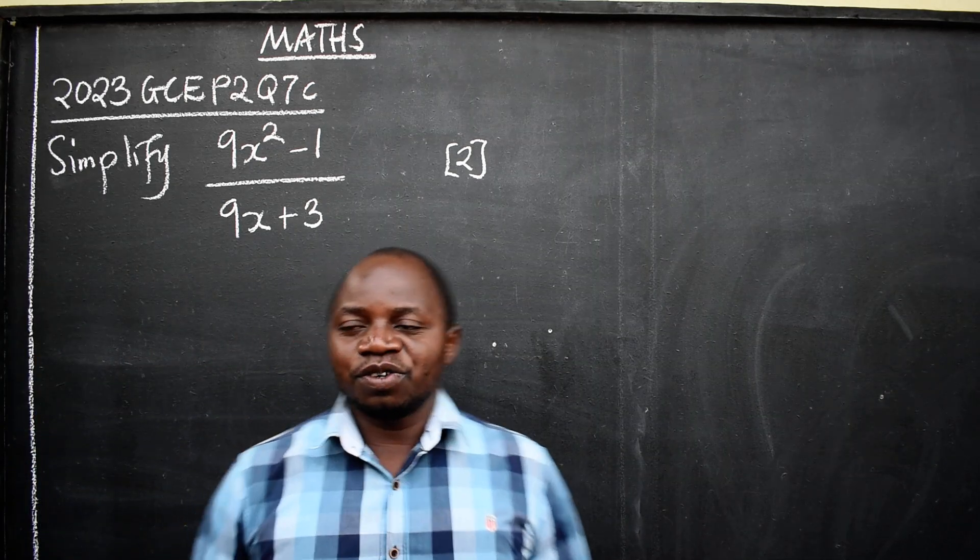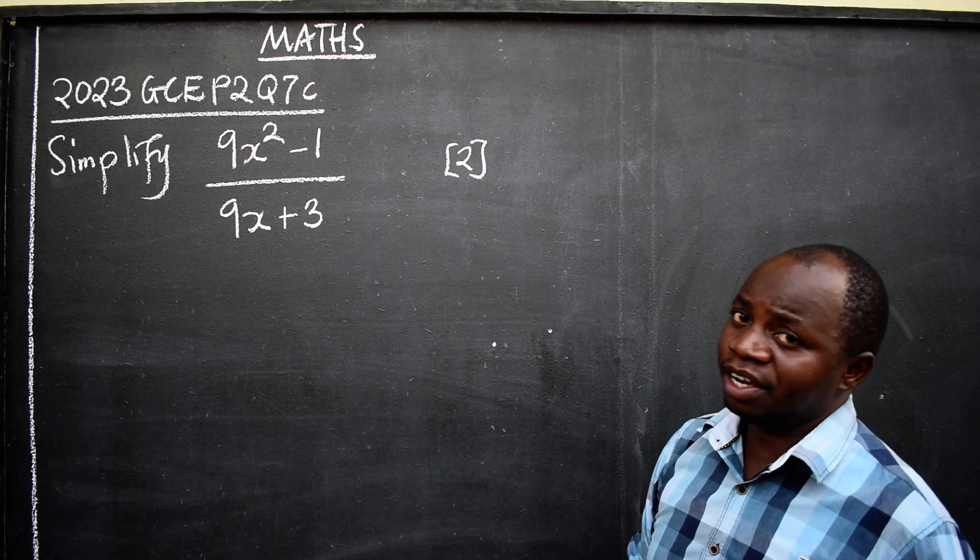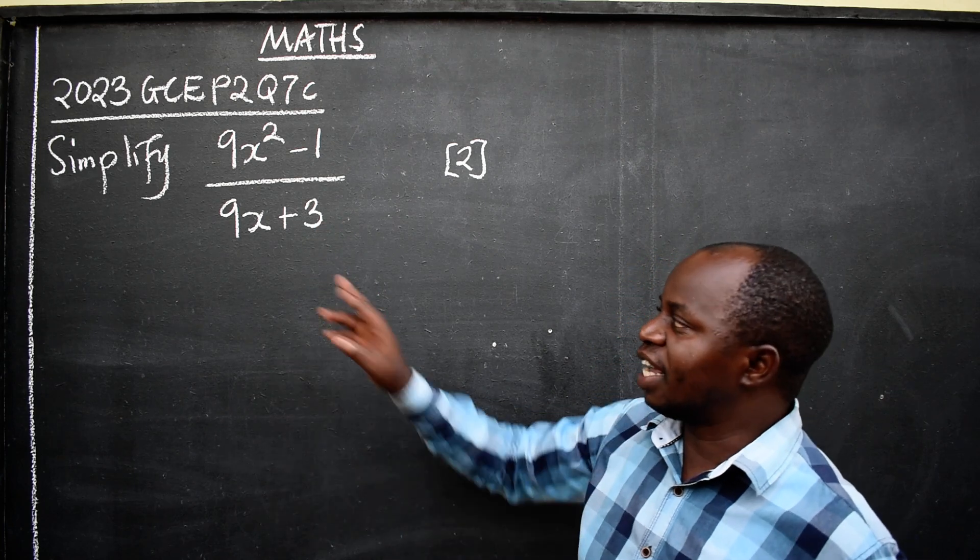Hi, let's look at this question. Simplify 9x squared minus 1 over 9x plus 3.